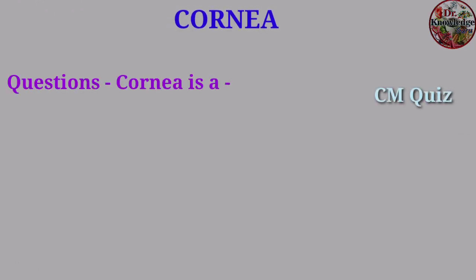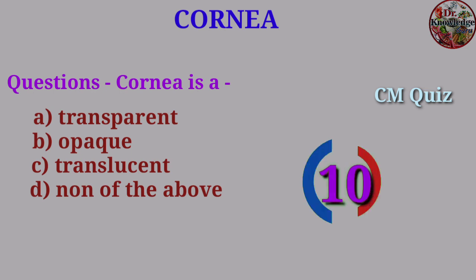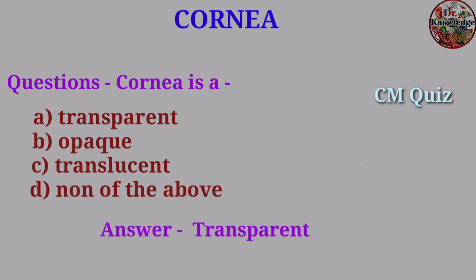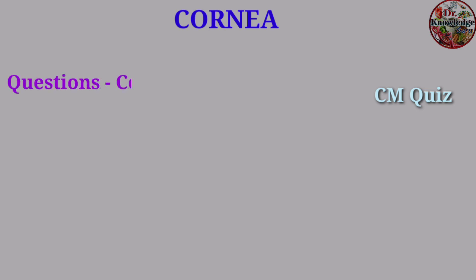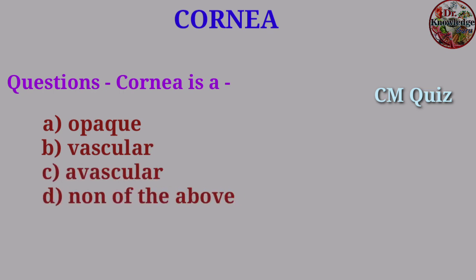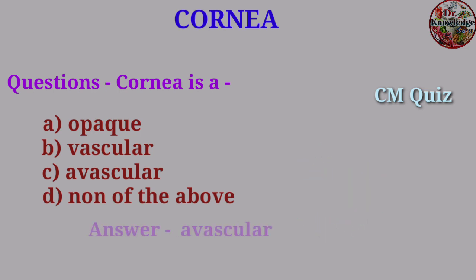Question: Cornea is — A. Transparent, B. Opaque, C. Translucent, D. None of the above. Answer: Transparent. Question: Cornea is — A. Opaque, B. Vascular, C. Avascular, D. None of the above. Answer: Avascular.